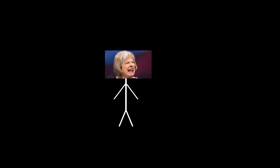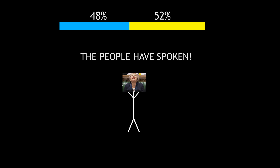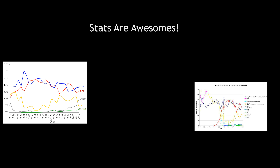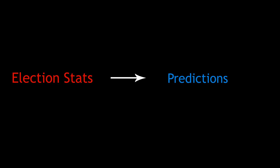At the time of making this video, it's June 2017 and the UK Prime Minister Theresa May has called a snap election in the wake of the UK's decision to leave the European Union. Now politics, especially with today's landscape, is a touchy subject and one that many people can find boring, but we can all agree that election statistics are awesome. And what's better than election statistics? Using those statistics to predict elections.